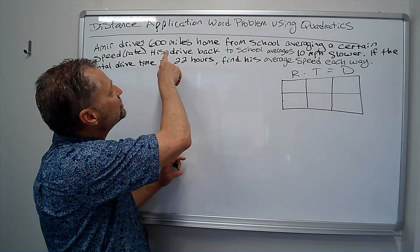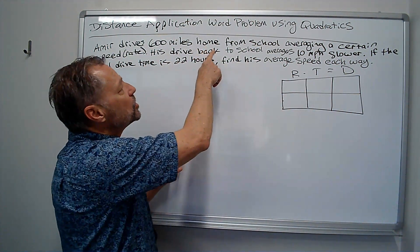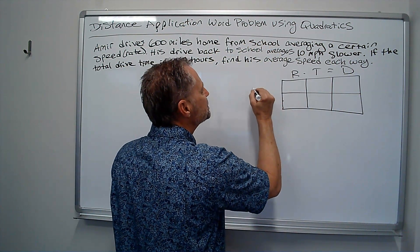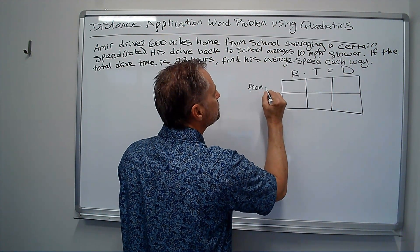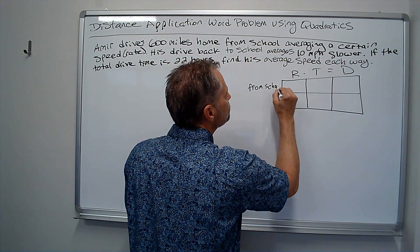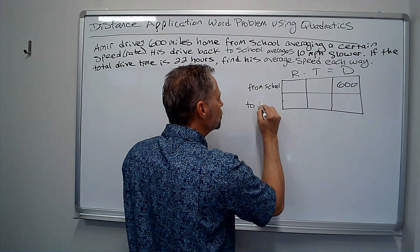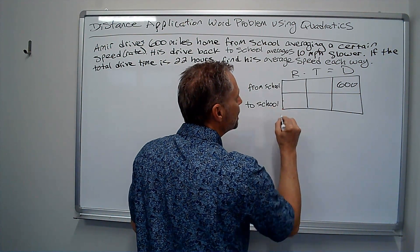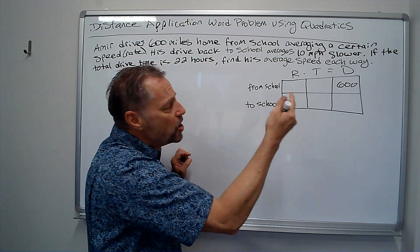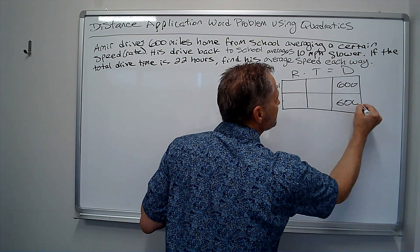So it says he drives 600 miles home from school. Let's say from school, he drove 600 miles, and then he goes back to school. If he's driving back from home, that's another 600 miles. We know that distance as well.